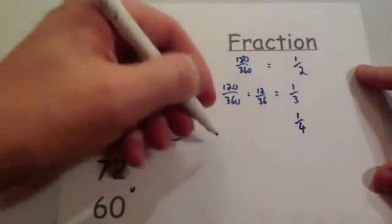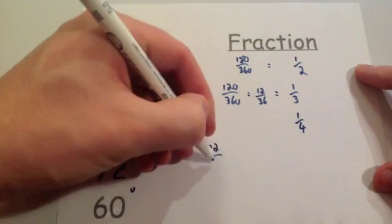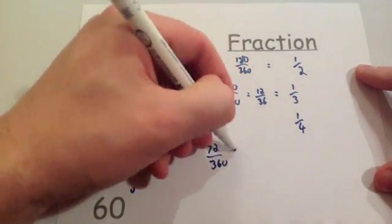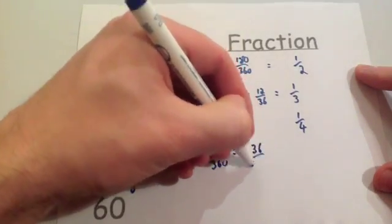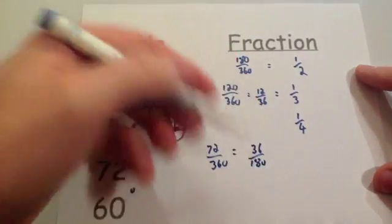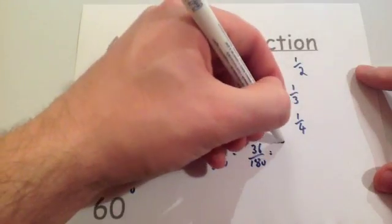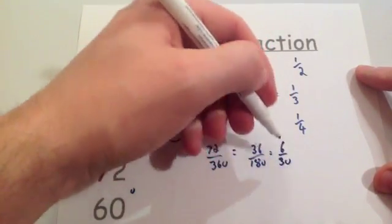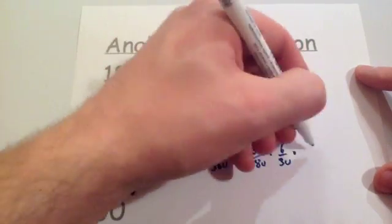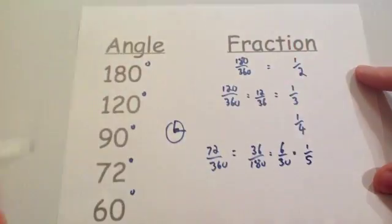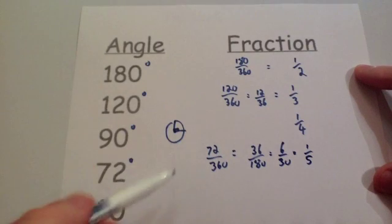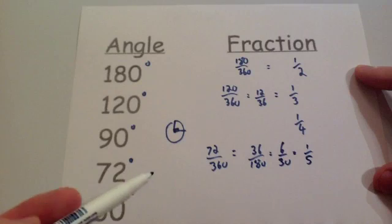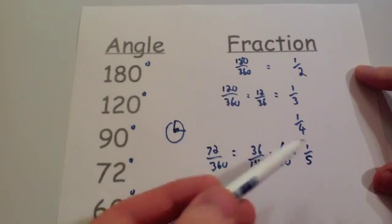72 degrees. 72 degrees out of the 360. If you divide both of these by 2, you would get 36 over 180. They're both in the 6 times tables. Divide both of those by 6, and you're going to get 6 over 30. And both of those again are in the 6 times tables. So divide both by 6, and you're going to get one fifth. So if you had five 72 degree angles, they would make the whole pie chart of 360 degrees. So a 72 degree angle would represent a fifth of a pie chart.